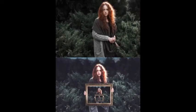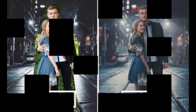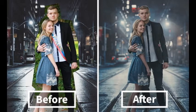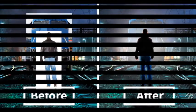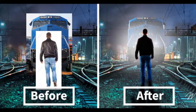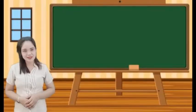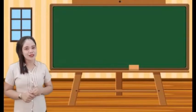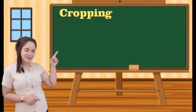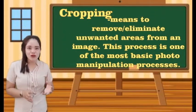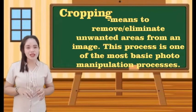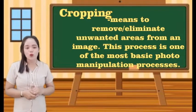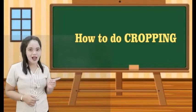These pictures are the result of image manipulation. There are six basic techniques of manipulating an image that you need to know. The first one is what we call cropping. Cropping means to remove or eliminate unwanted areas from an image. This process is one of the most basic photo manipulation processes. This is how to do the cropping.